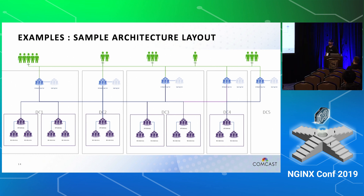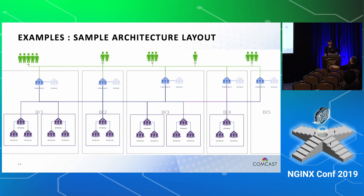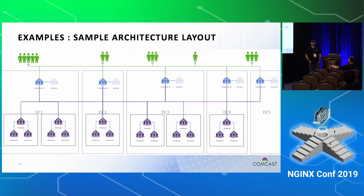Q: How are you driving traffic between data centers — is it a GSLB layer, DNS-based? A: For entry into the NGINX clusters, yes, GSLB. It's F5 GTM. We're using F5 GTM and F5 LTMs as IP concentrators.